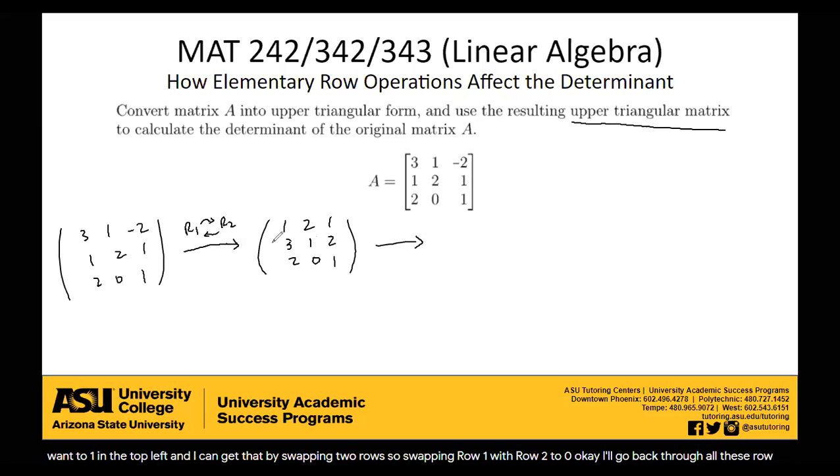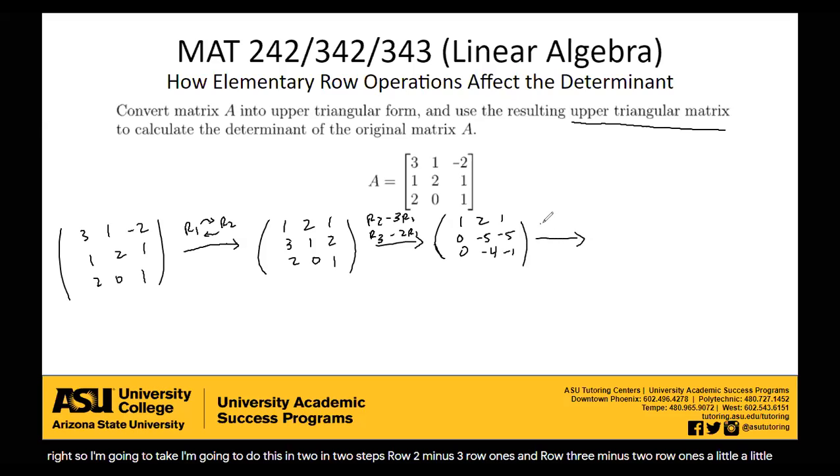My next steps are to get zeros beneath it, right? So I'm going to take, I'm going to do this in two steps. Row two minus three row ones and row three minus two row ones. Kind of going through this a little faster because we've done a good portion of this kind of work with getting a matrix into reduced row echelon form.